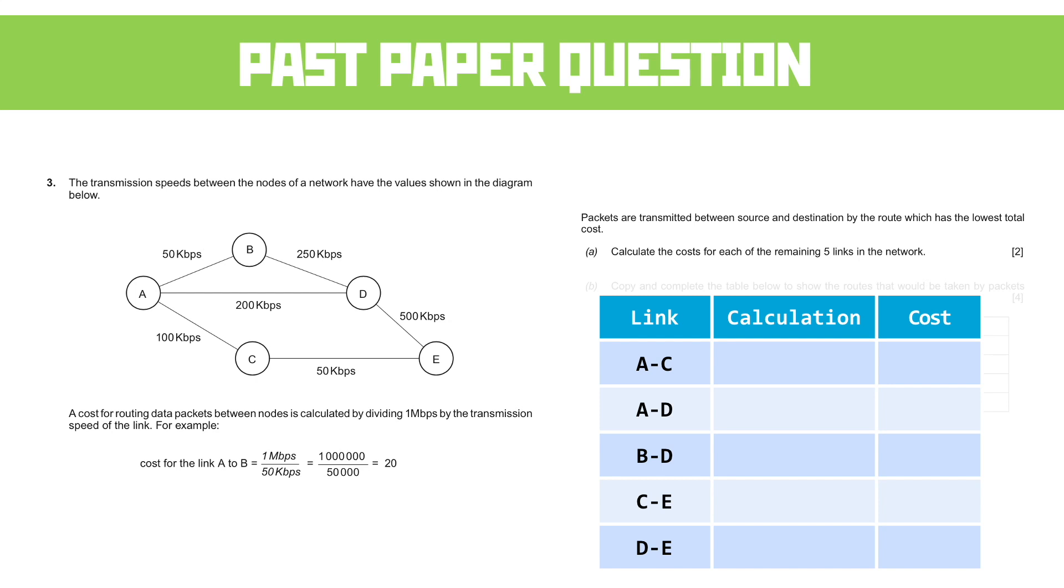So the first job is what's the sum? So A to C, our connection bandwidth is one megabit, so that's always going to be a million, and the A to C link is 100 kilobits, so that's 100,000. So it's a million divided by 100,000, gives us a cost of 10.